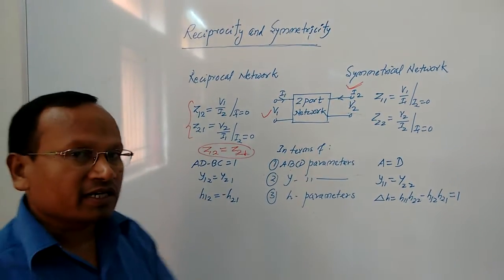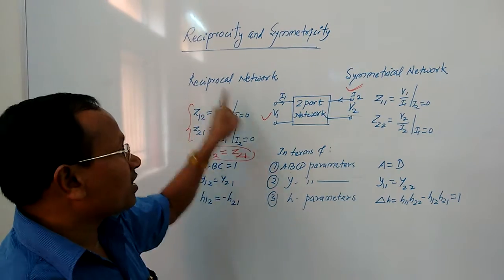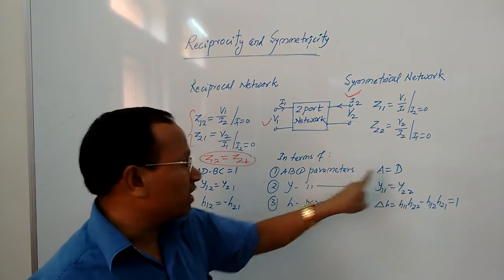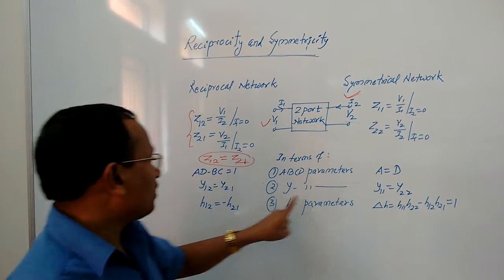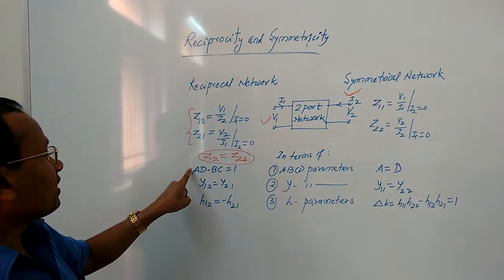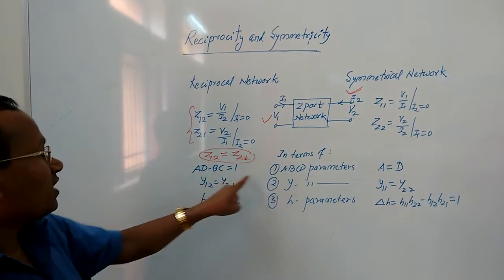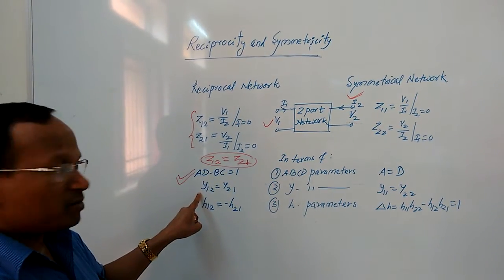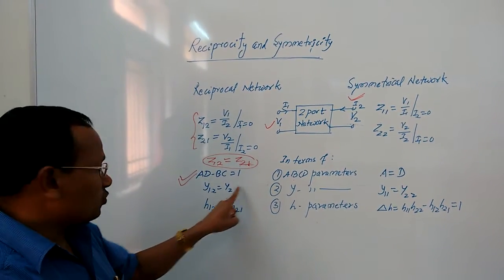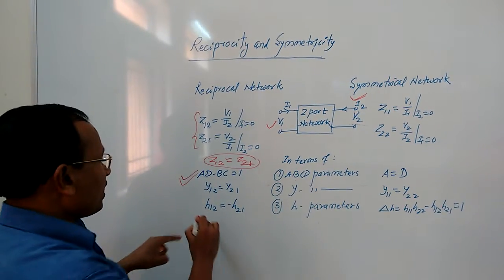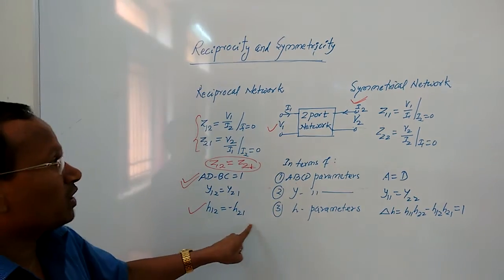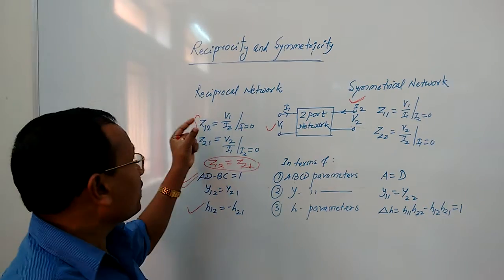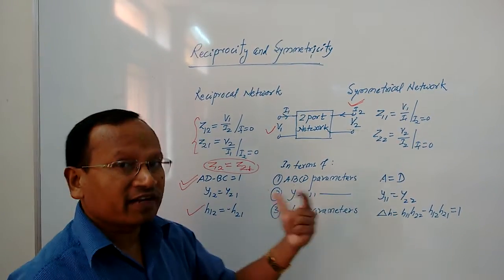As for the conditions for reciprocity in terms of other parameters: in ABCD parameters, AD minus BC is equal to 1; in Y parameters, Y12 equal to Y21; in H parameters, H12 equal to minus H21. Now let us go to the symmetrical network and understand how we get these conditions using different parameters.